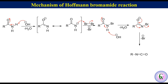In some books it is mentioned that the N-bromoamide is first converted to a nitrene which then rearranges to isocyanate, but the first mechanism is more acceptable.